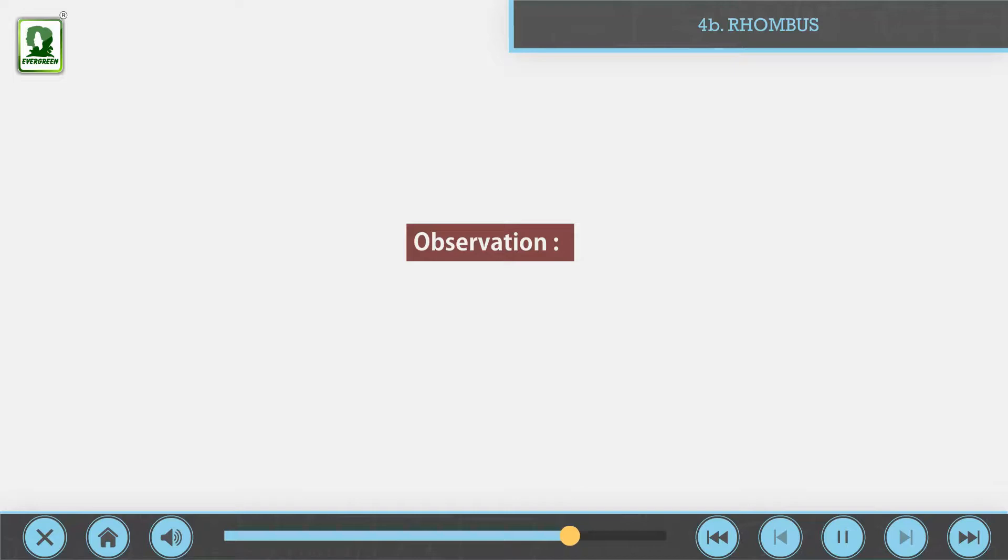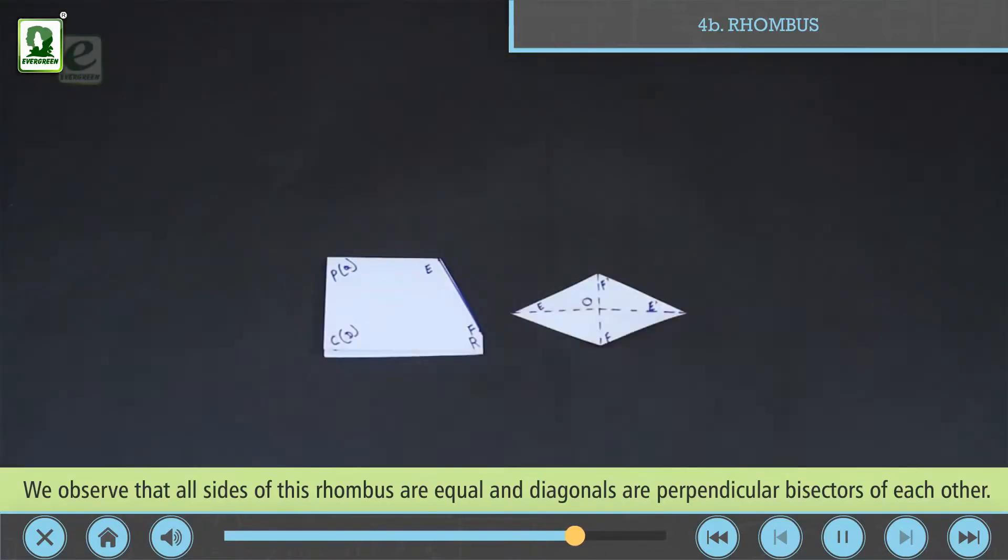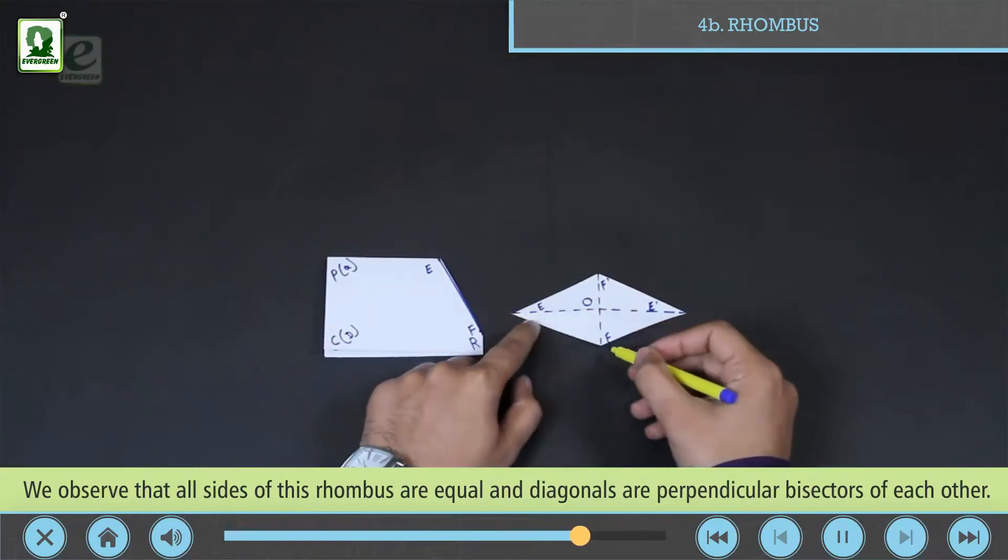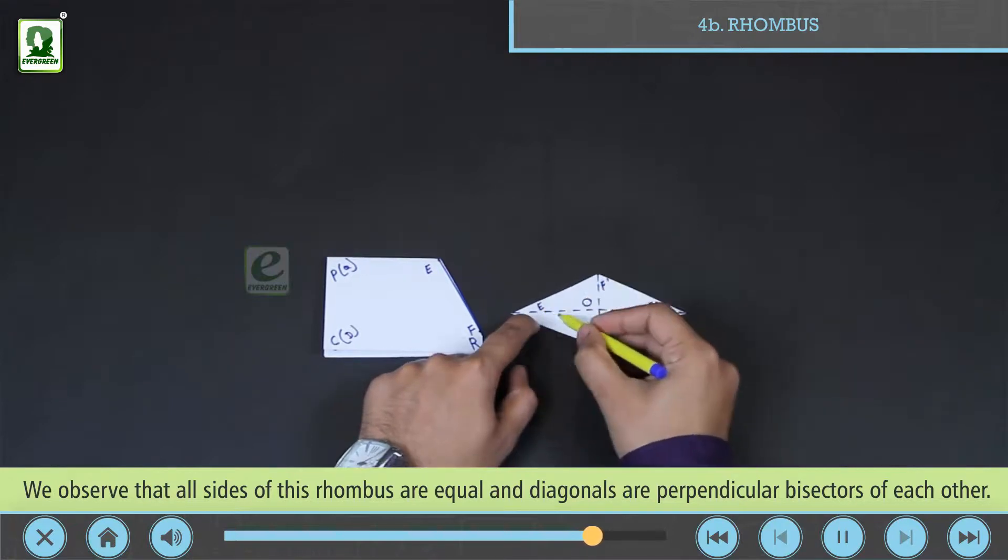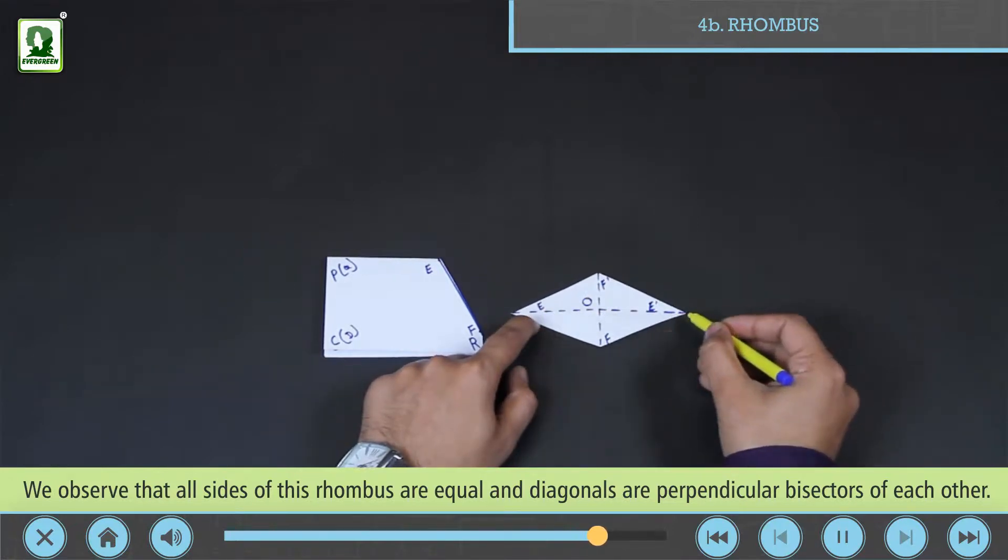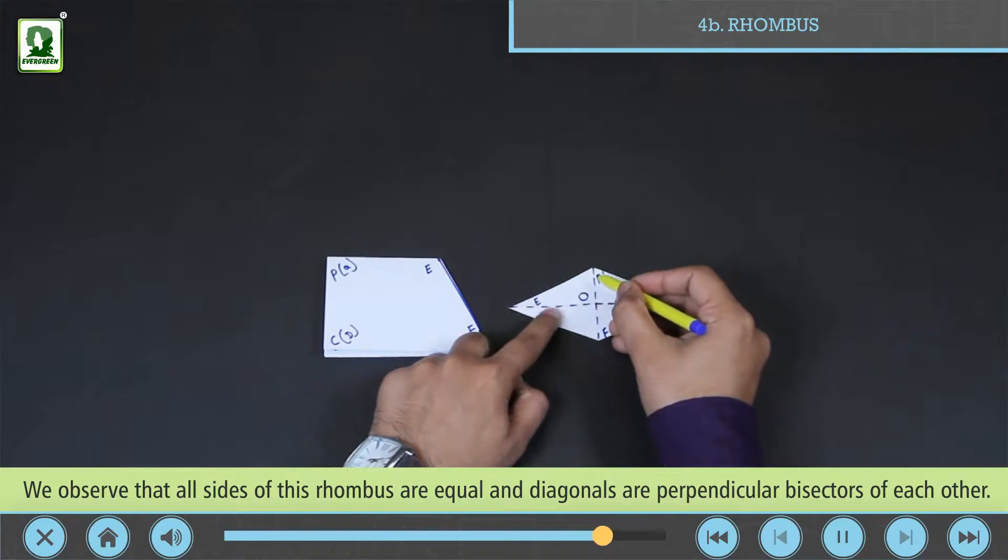Observation: We observe that all sides of the rhombus are equal and diagonals are perpendicular bisectors of each other.